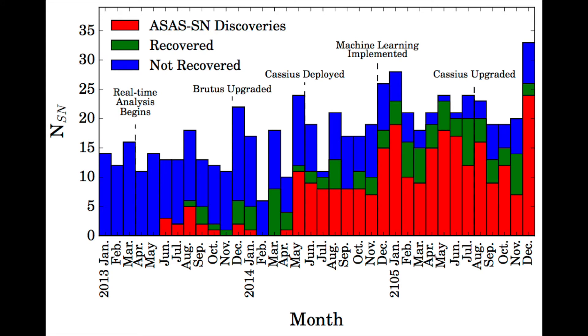ASASSIN's impact can also be seen when examining the number of supernovae discovered per month in 2013, 2014, and 2015. In this histogram, red represents ASASSIN discoveries, green represents supernovae discovered by other groups but recovered in ASASSIN data, and blue represents supernovae discovered by other groups that are not recovered in our data.